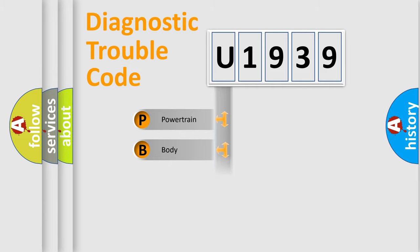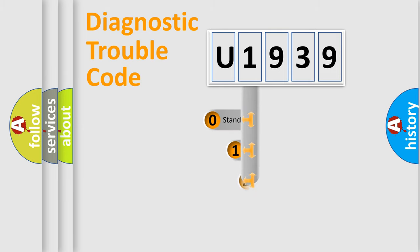Powertrain, Body, Chassis, Network. This distribution is defined in the first character code.